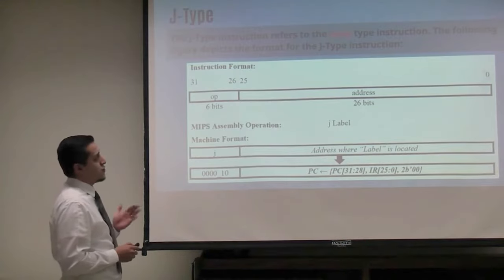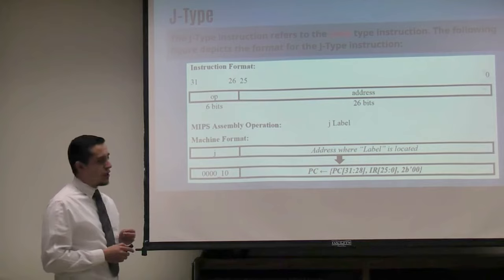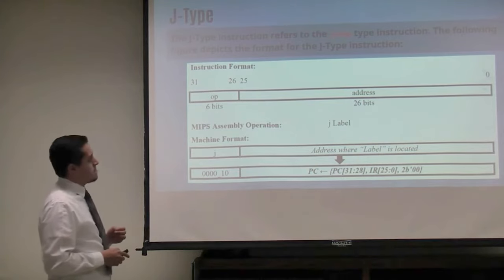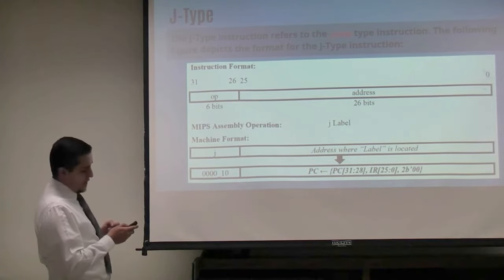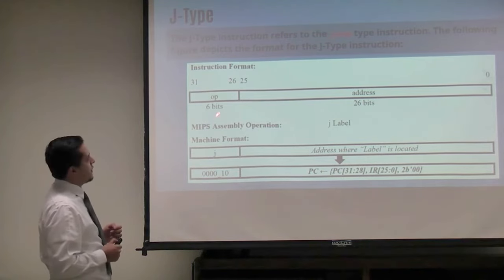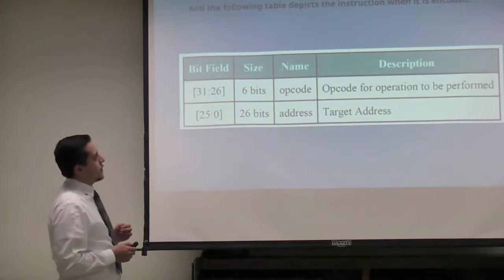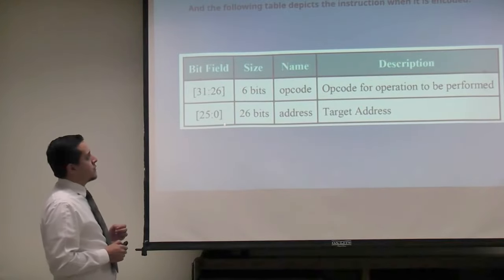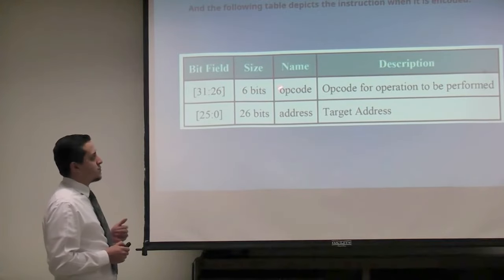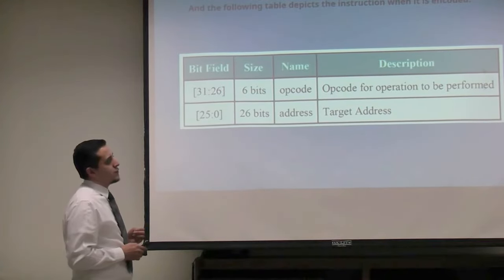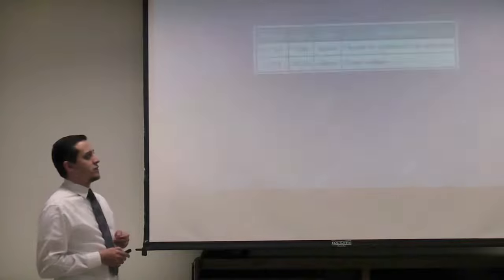And J is for jump instruction set. Here is the instruction format and how it is encoded: 6 bits for the opcode and 26 bits for the target address.